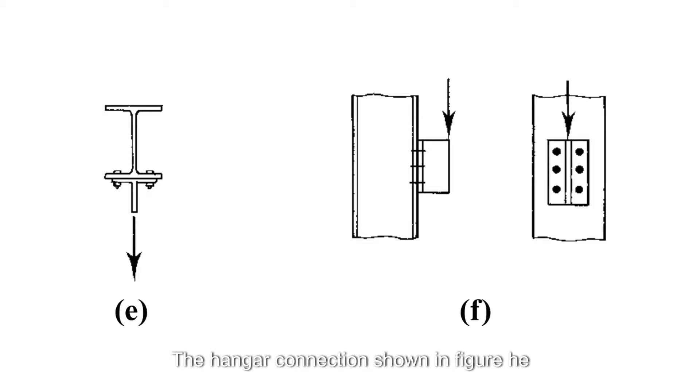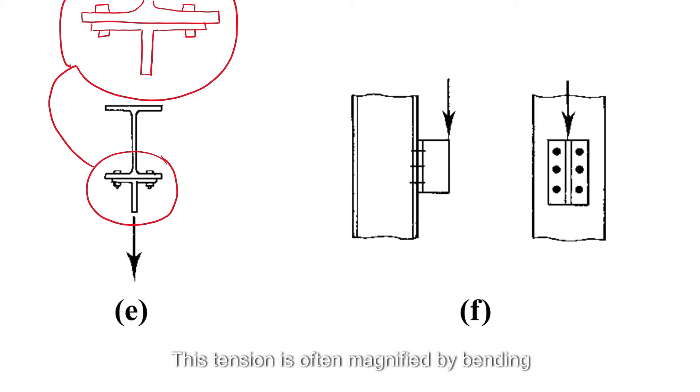The hanger connection shown in figure E puts the fasteners in tension. This tension is often magnified by bending in the connected part and is called prying action.